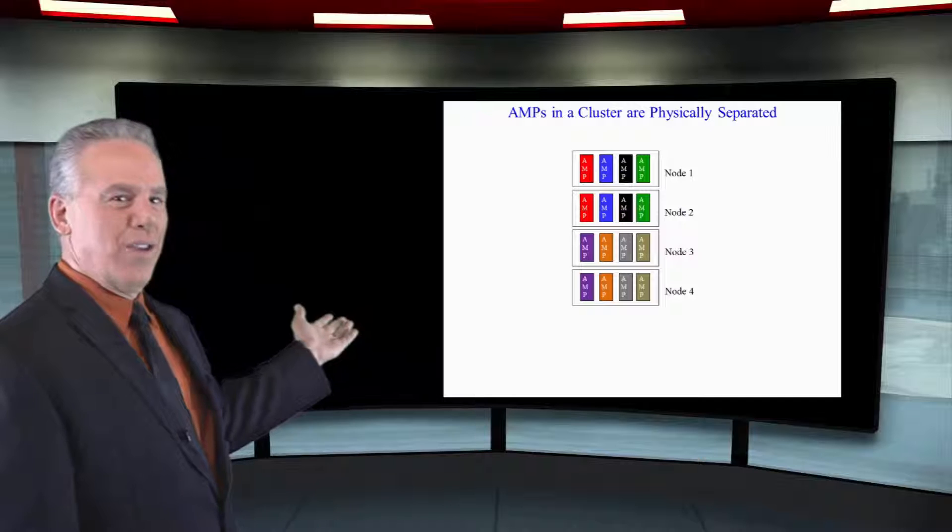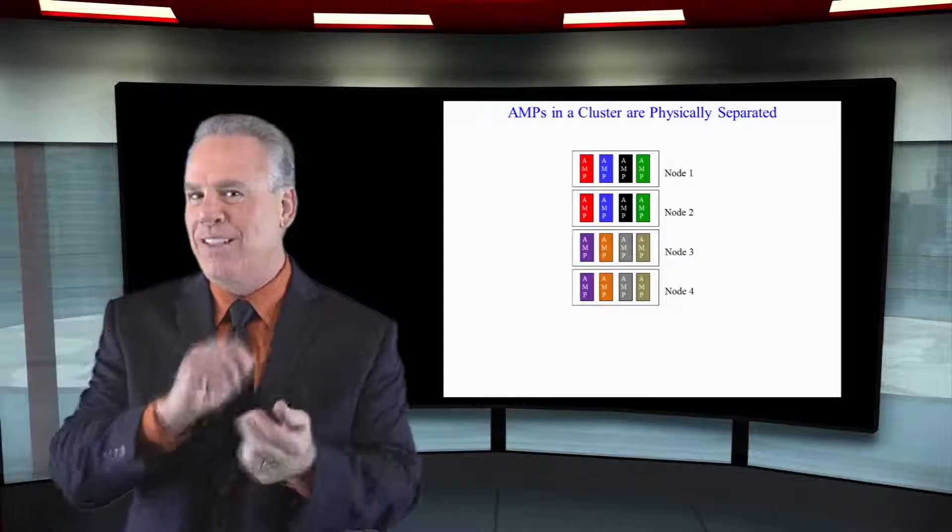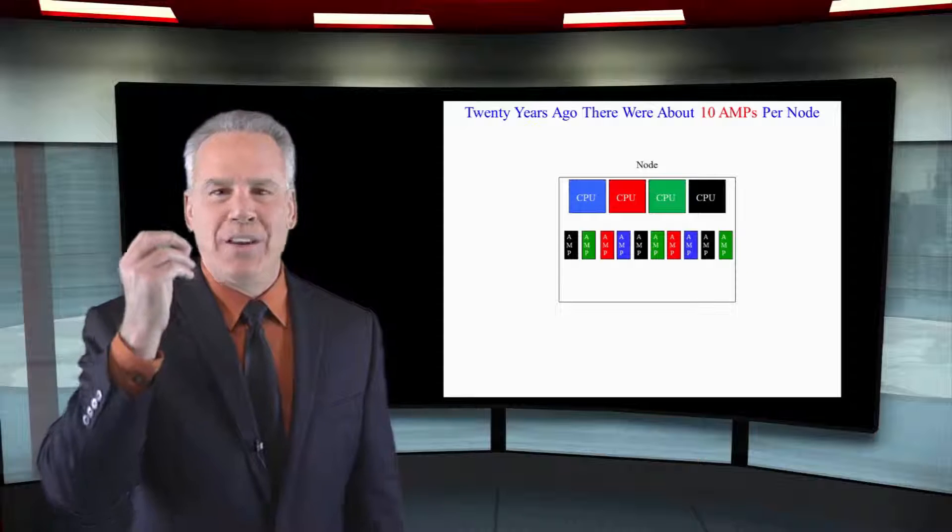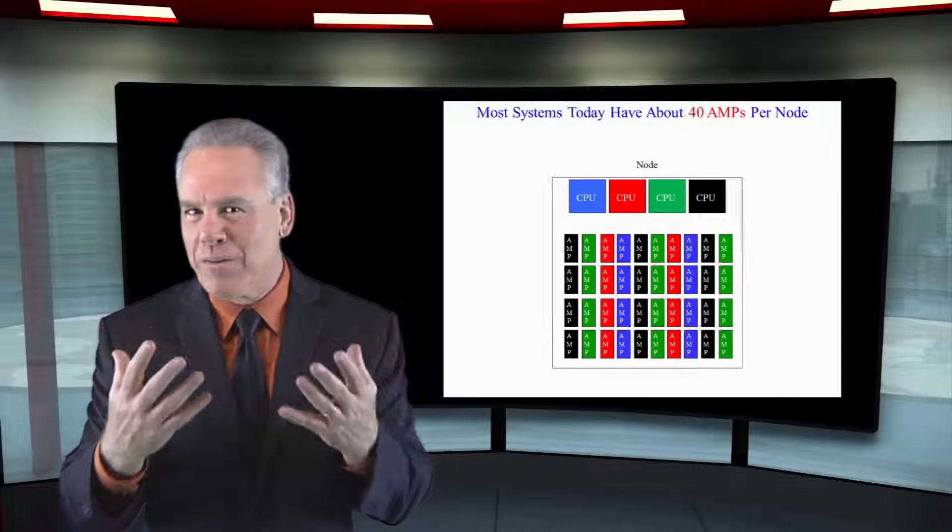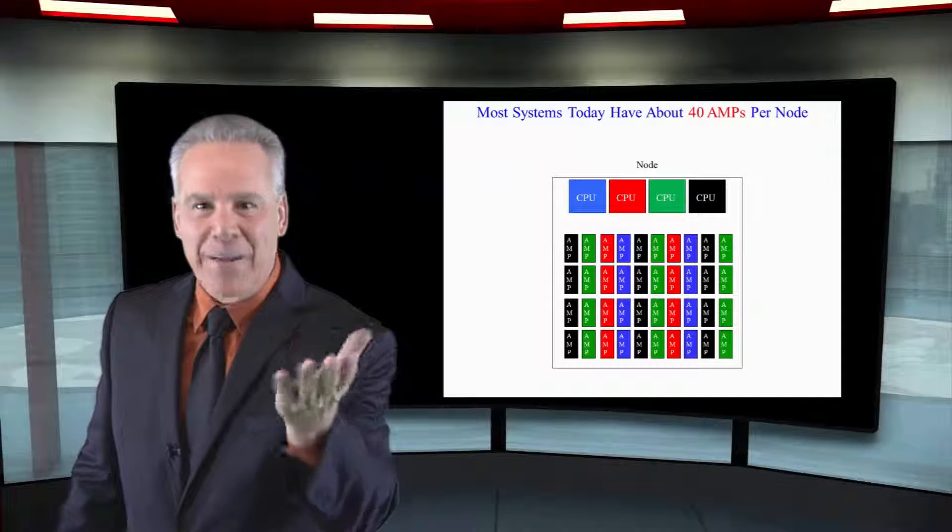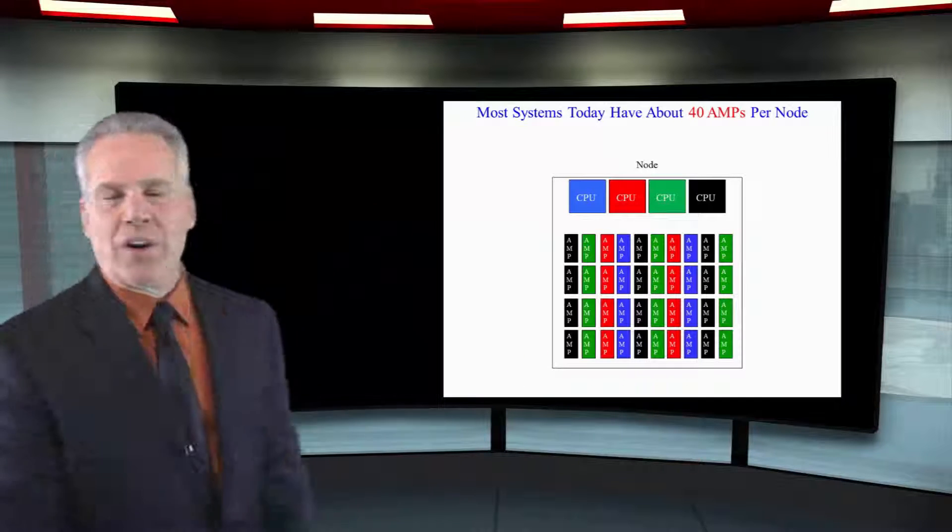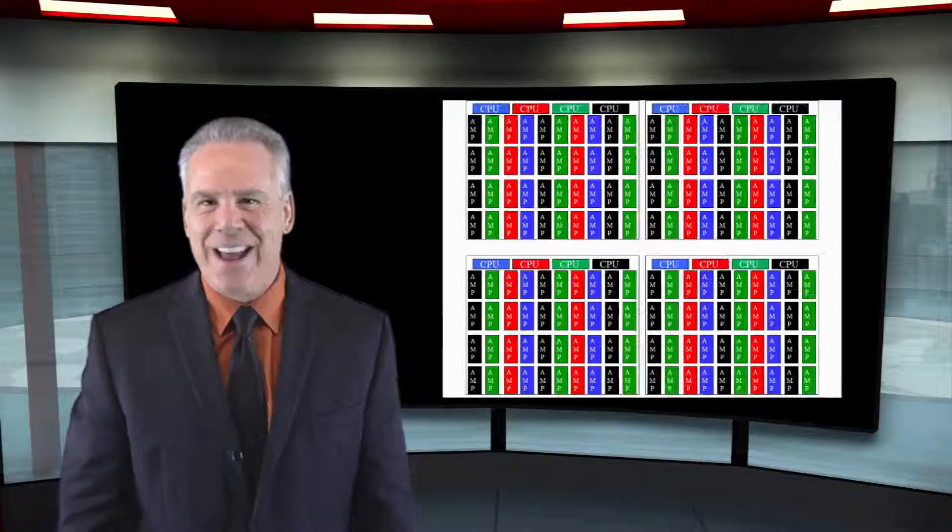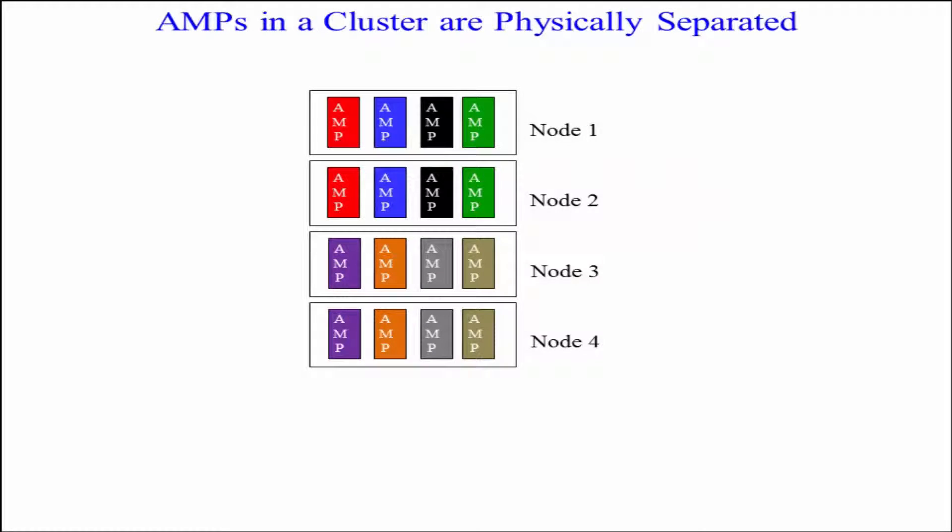Here you can see four nodes. Back when we first started doing this with vprox in these nodes, Teradata would put about 10 AMPs in each node. Now, the CPUs are so powerful, the memory is so strong, they're getting like 40 AMPs in each one of these nodes. So with a four node system, you're going to have like 160 AMPs. I've only got four in each just to show you how fallback and the clustering is going to work together.